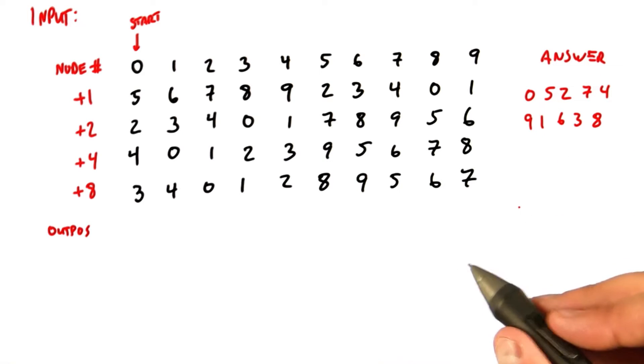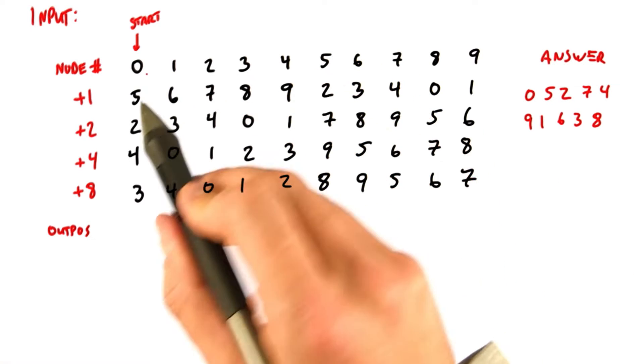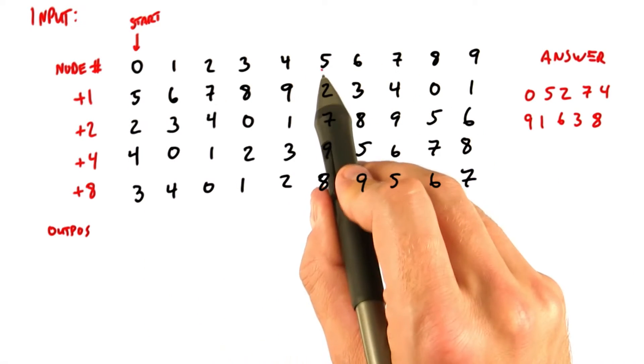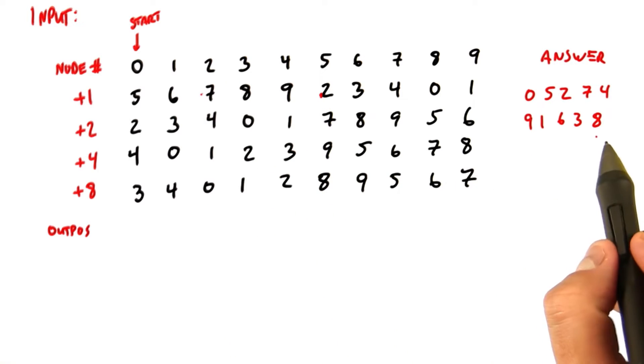Remember, we can get that by using a serial algorithm just to convince ourselves that it's correct. We start at node 0, its successor is 5, the successor to 5 is 2, the successor to 2 is 7, and so on.